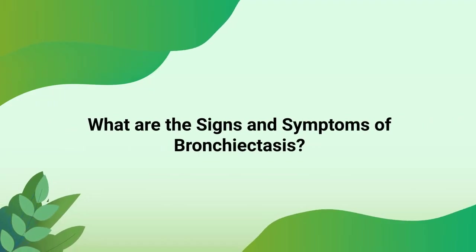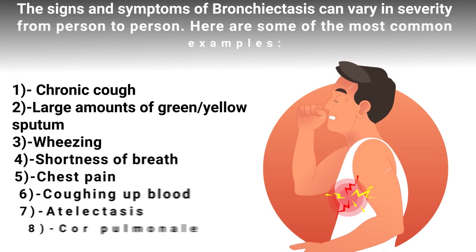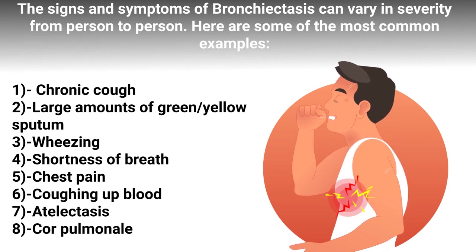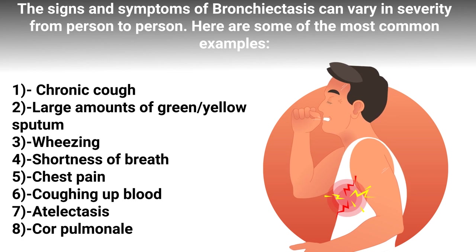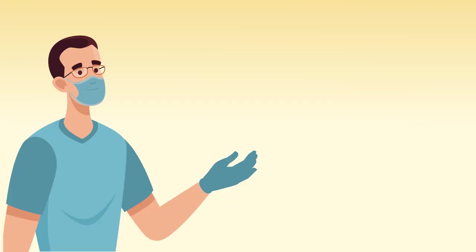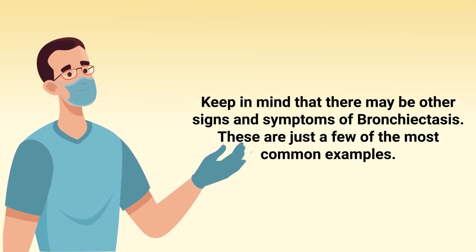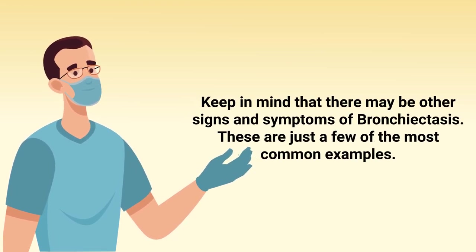The signs and symptoms of bronchiectasis can vary in severity from person to person. Some of the most common examples include a chronic cough, large amounts of green or yellow sputum, wheezing, shortness of breath, chest pain, coughing up blood, atelectasis, and cor pulmonale. Keep in mind there may be other signs and symptoms — these are just a few of the most common examples.